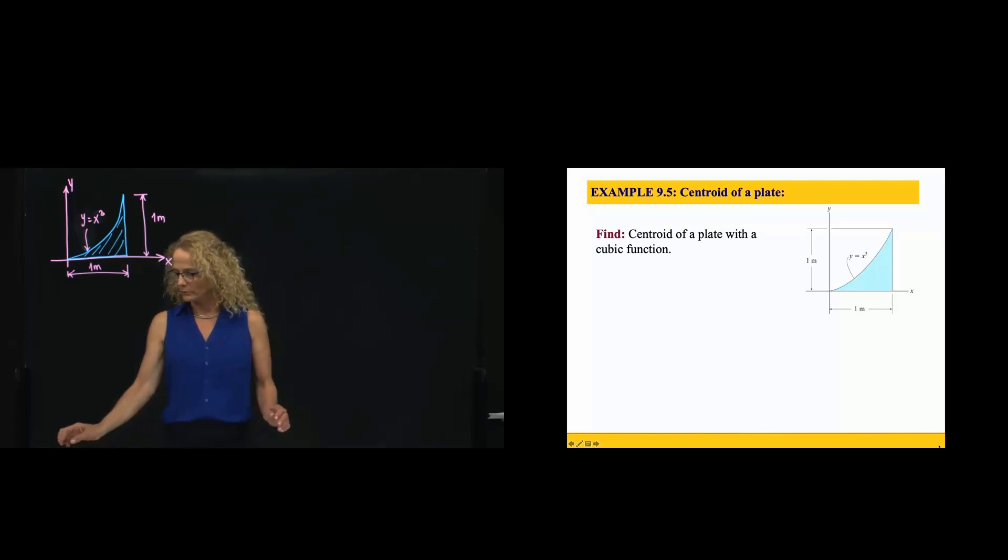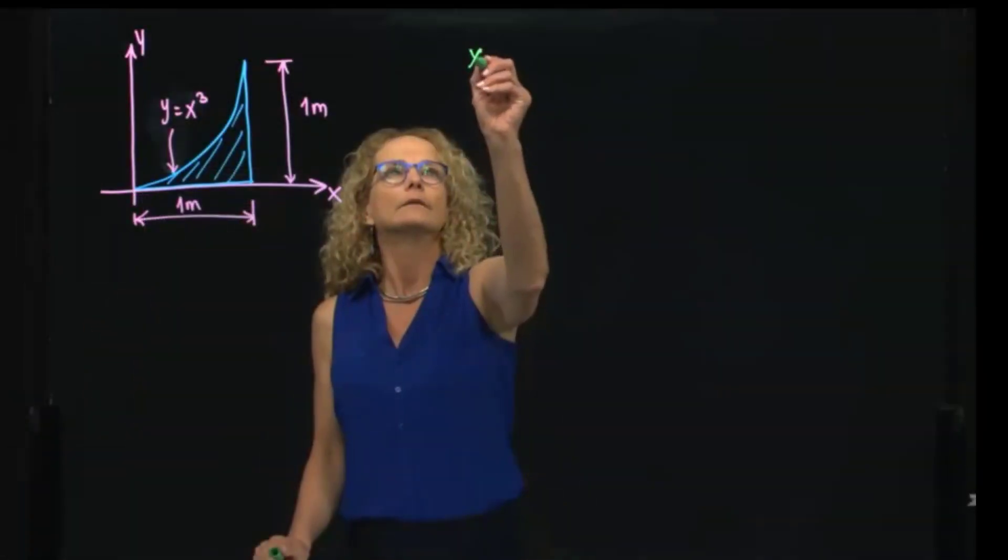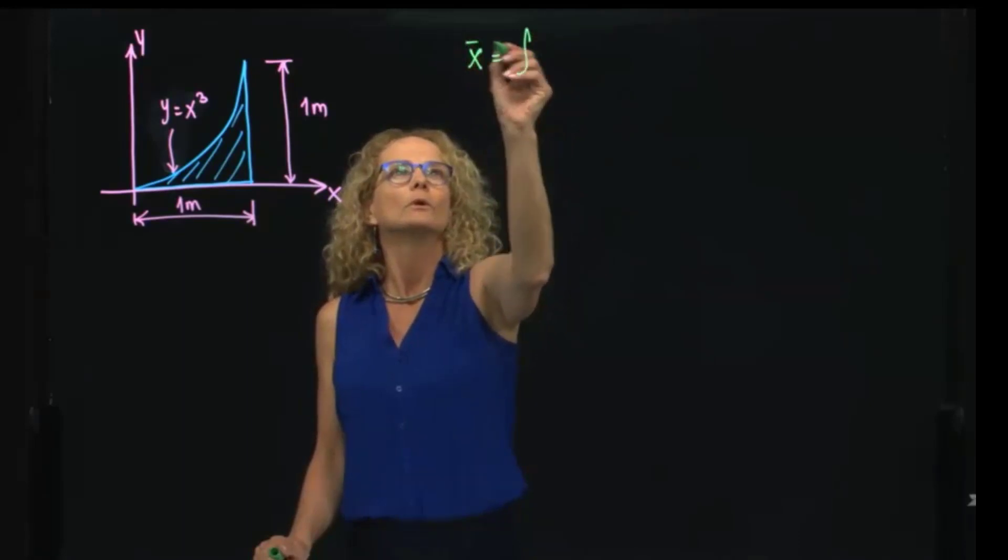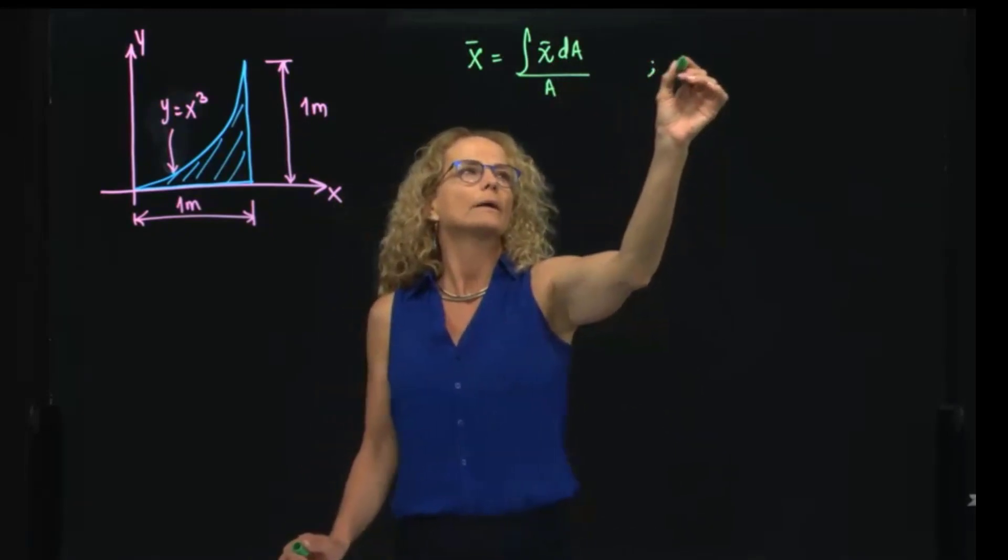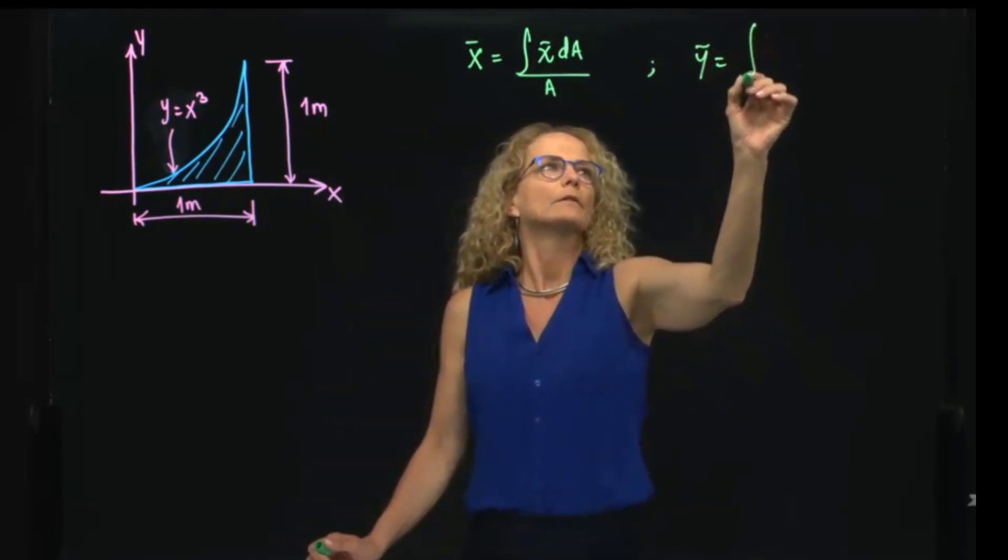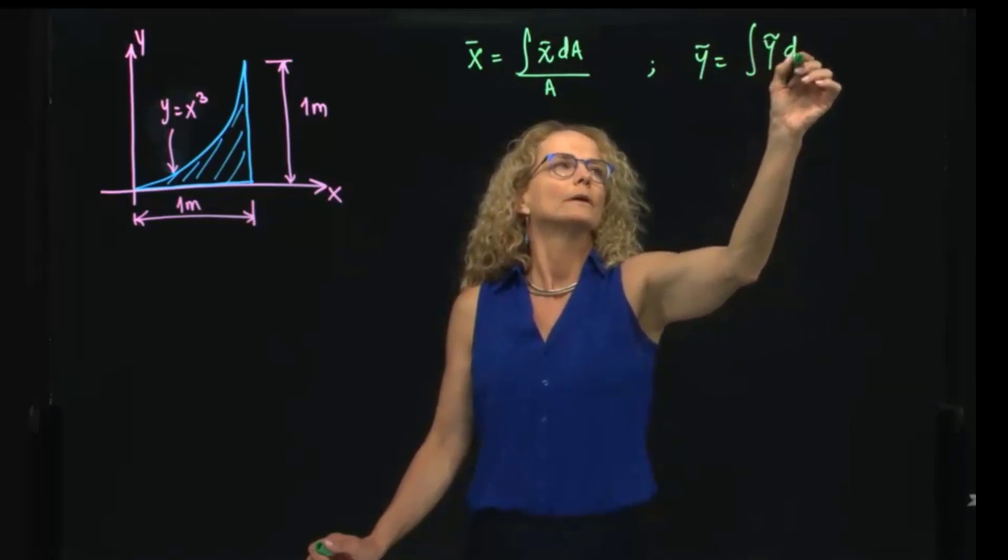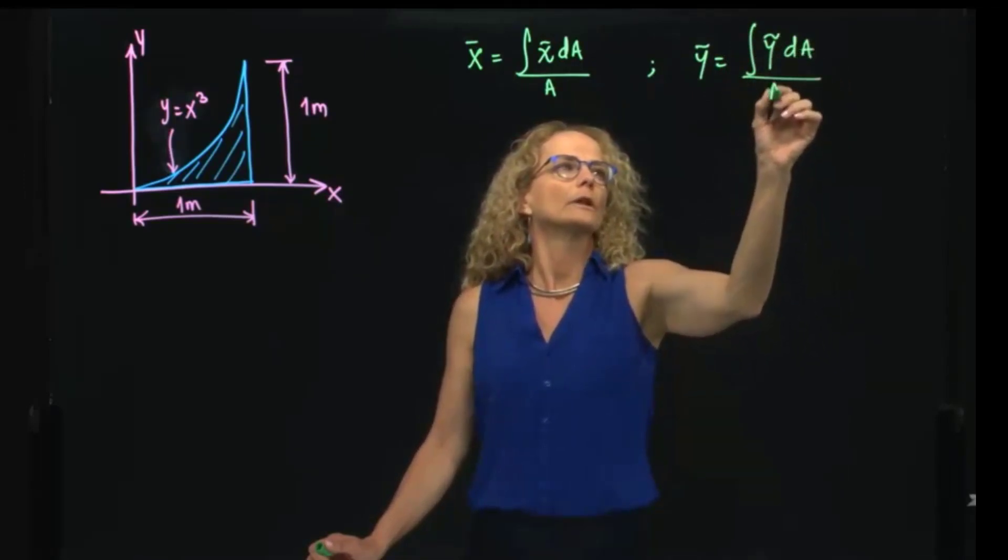So we have to recall the definition of centroid, and the centroid x̄ equals the centroid of my differential of area divided by the total area, and ȳ will be my centroid of the area divided by the total area.